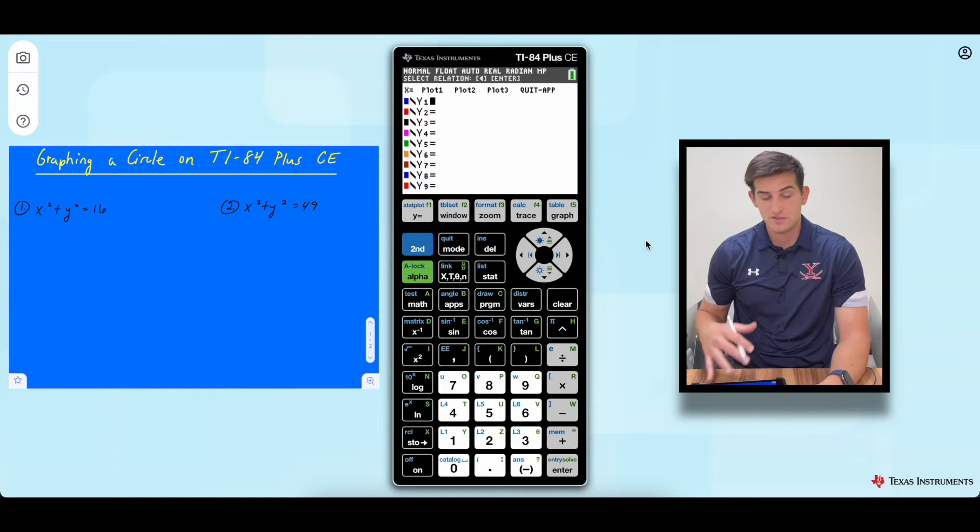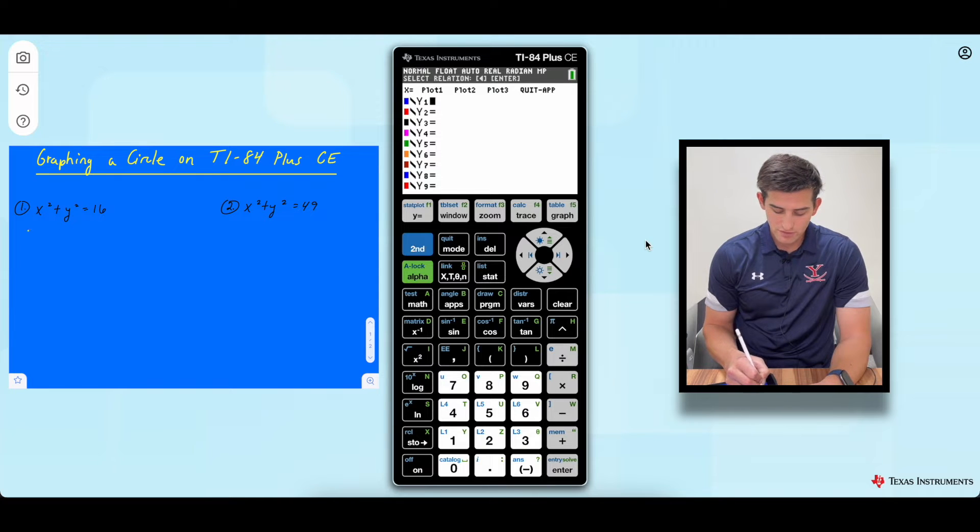So here we have two examples and we just want to solve them for y. That's all we need to do. So let's start off with number one and let's subtract x squared from both sides. So now we have y squared is equal to 16 minus x squared.